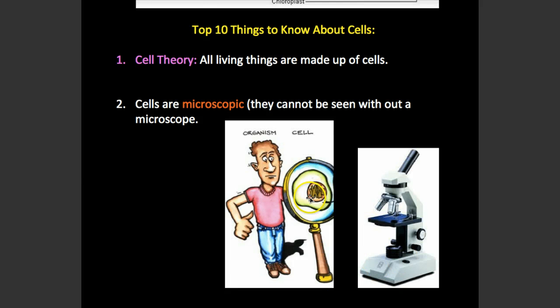Even though this is not a microscope, it's just showing you in a cartoon view that all cells are itsy bitsy, and you yourself are made up of cells — trillions of them make up you. We have specialized cells like blood cells, skin cells, eye cells, all these different types of cells that make us who we are.